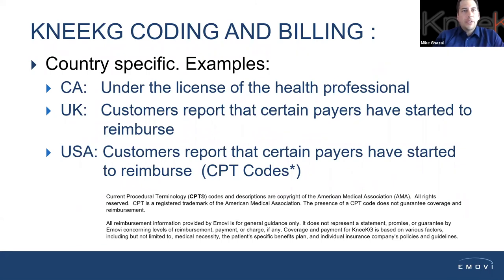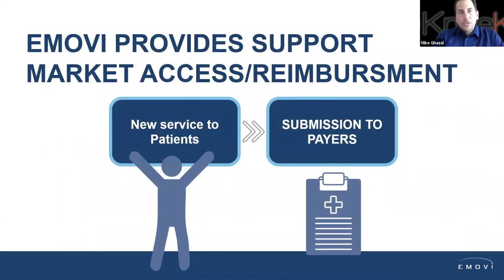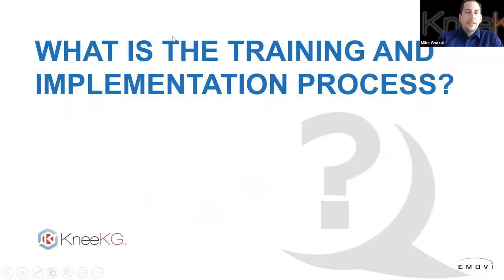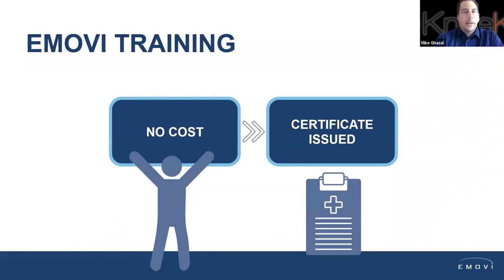In terms of public reimbursement, we're currently working on a pilot study with the Quebec government to obtain public reimbursement via RAMQ in Quebec. We're also doing economic studies in other regions in the US and Europe to obtain public reimbursement there as well — that's a work in progress. As of now, patients have been getting reimbursed through their private insurance. We also have professionals at iMovi that provide support in market access and reimbursement on the private side, supporting partner clinics in communicating with private insurers.